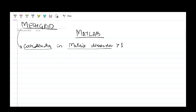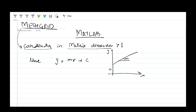First of all, let's talk about the general way of plotting, then we'll move to meshgrid. Generally, if we have to plot a line y = mx + c, we take different points on the x-axis and get corresponding y values, then plot using the command plot(x, y).